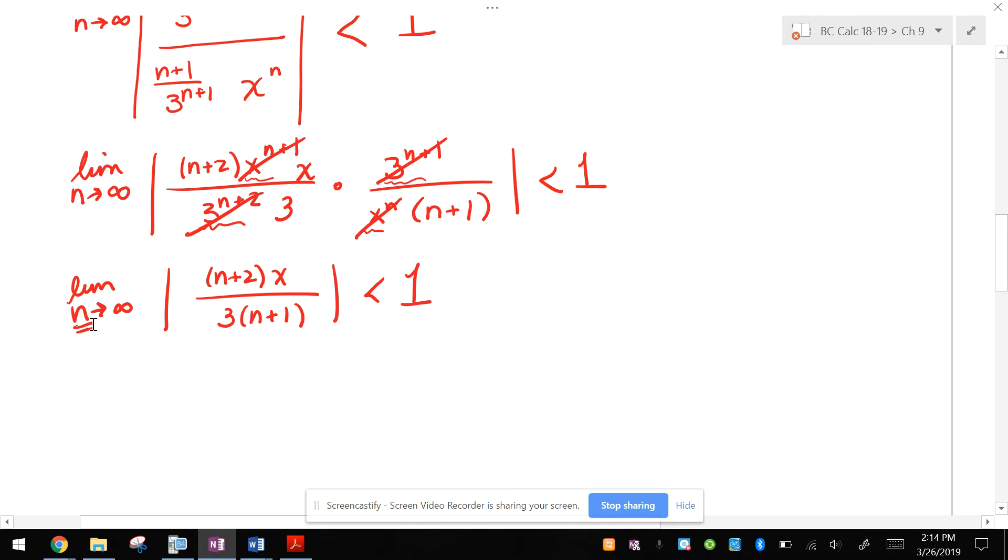I have the limit as n approaches infinity, which means everything else is just considered a coefficient. So what I'm going to do right now is rewrite this and take out the things that aren't n's. x over 3 can come out in front. And then I'm still taking the limit as n approaches infinity of n plus 2 over n plus 1.